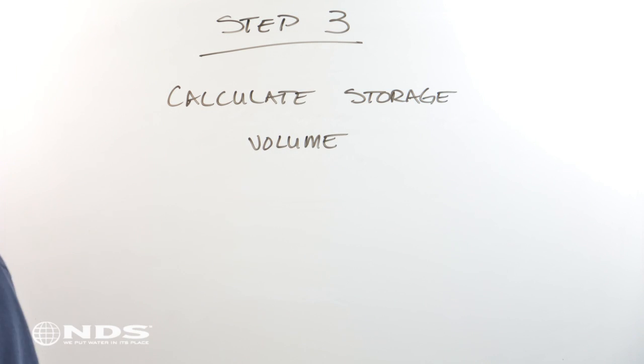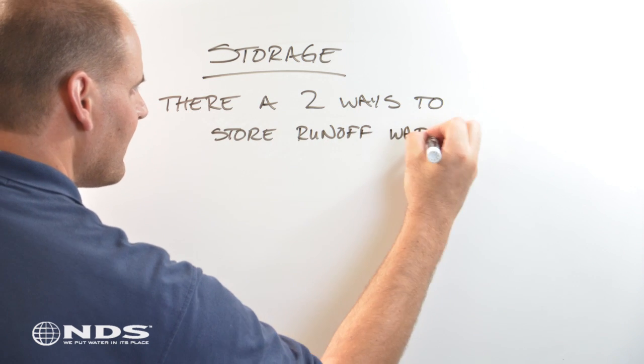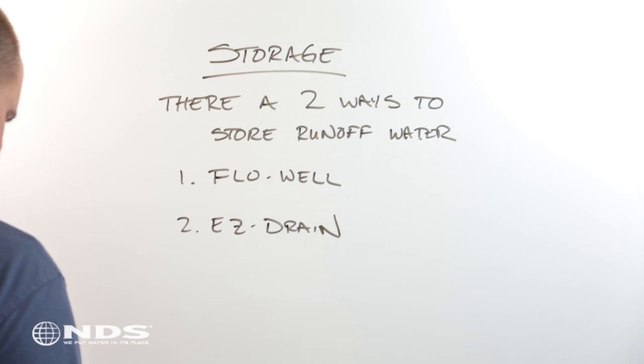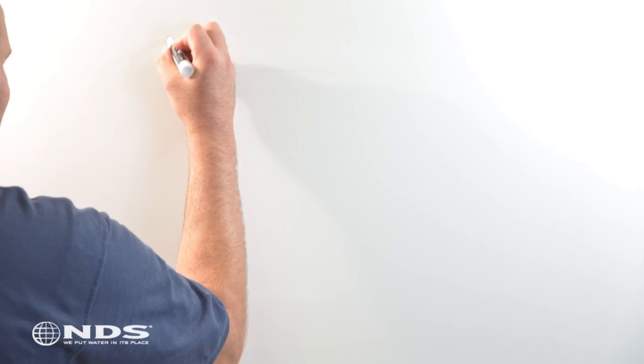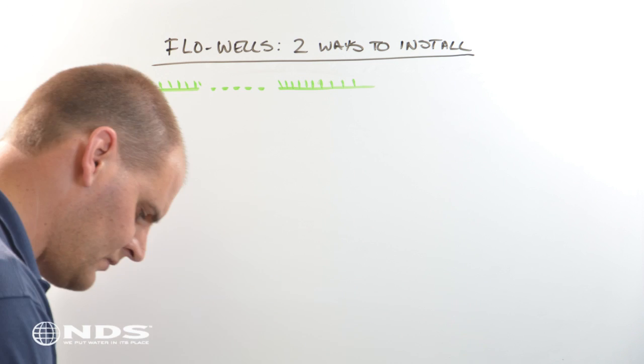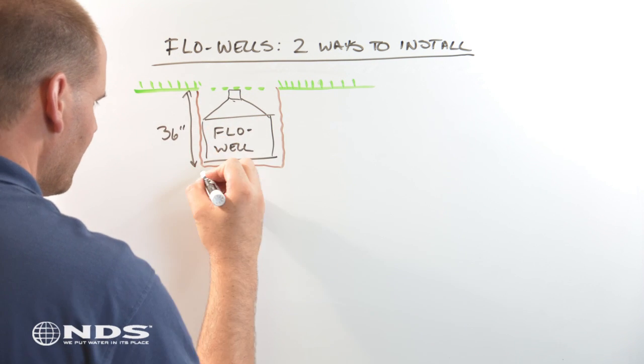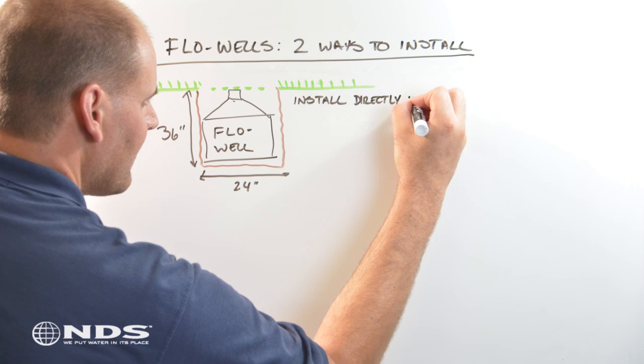Let's figure out how to store the water. NDS flow wells and easy drain are two products I recommend for storing water runoff. A flow well is a subsurface manufactured dry well used to temporarily store runoff water as it percolates into the ground. The flow well is a gravel free alternative to a traditional dry well.